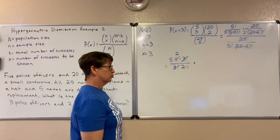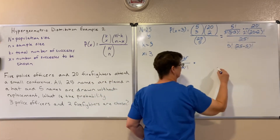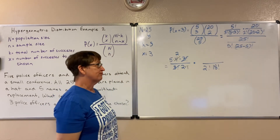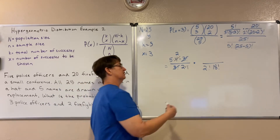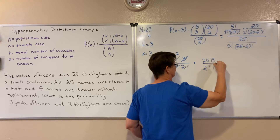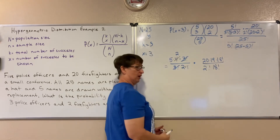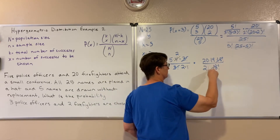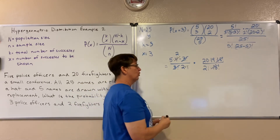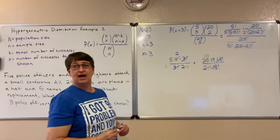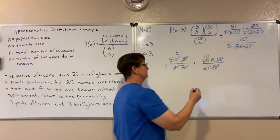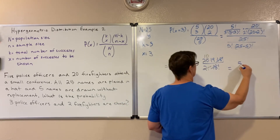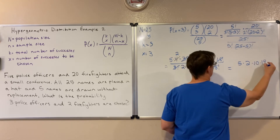Now I'll do 20C2. On the bottom, 20 minus 2 gives me 18 factorial, and then I have 2 factorial. For 20 factorial, I can write it as 20 times 19 times 18 factorial — the 18 factorials cancel. The 2 factorial is just 2, and 2 goes into 20 ten times, so I have a 10 there. So on top I'm left with 5 times 2 times 10 times 19 in my numerator.